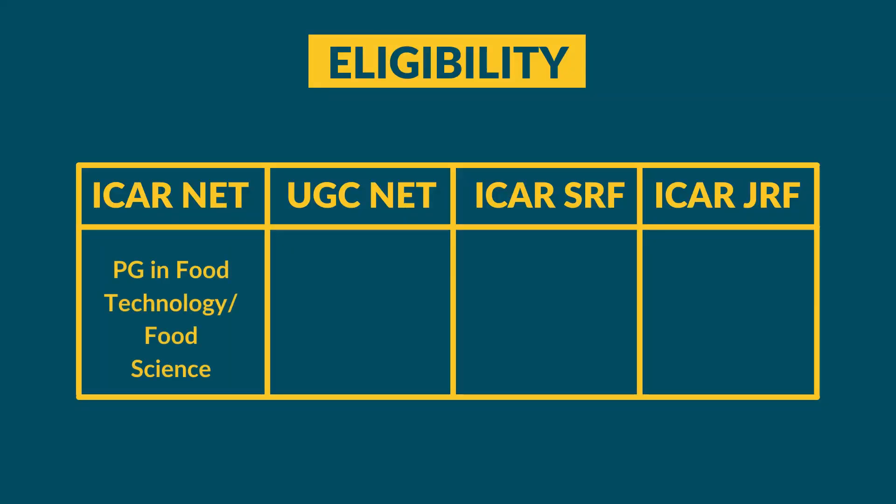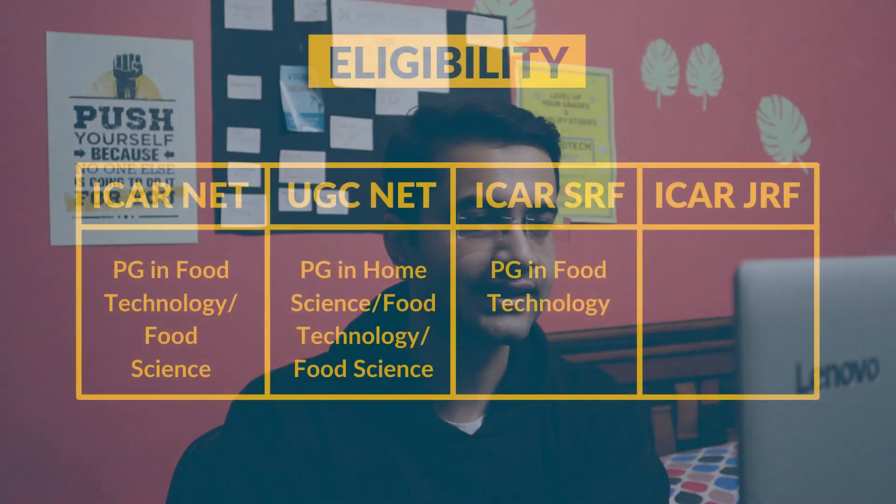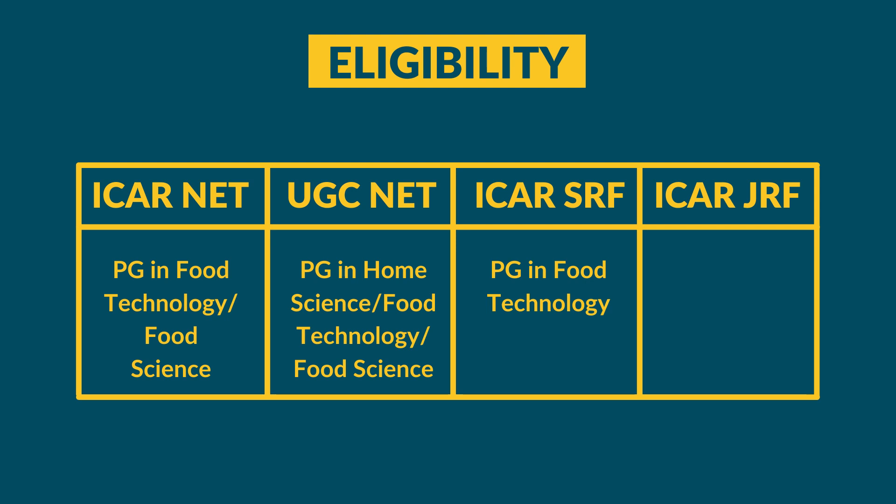For ICER-NET, you need a post-graduate degree — MSc or M.Tech in food technology or food science — to be eligible to apply. For UGC-NET home science, you need a master's degree in home science, food technology, or food science. For ICER-SRF, you need a master's in food technology, but importantly, it must be from an ICER-accredited college.